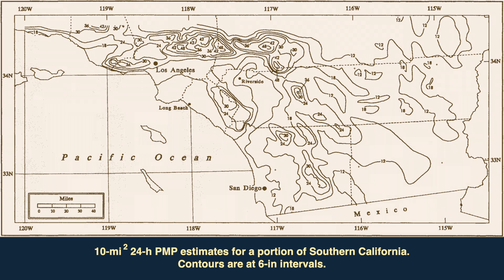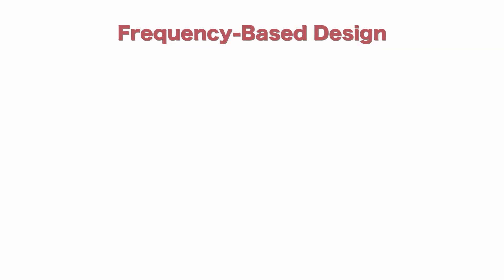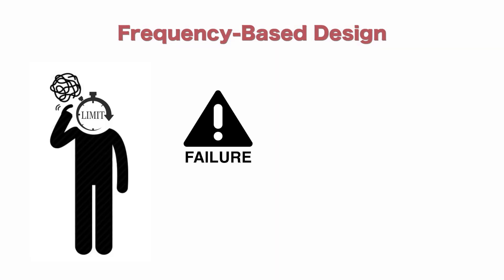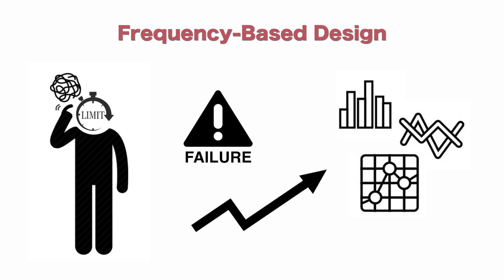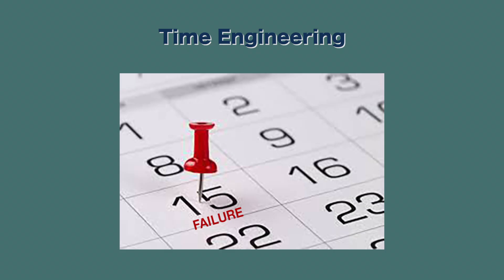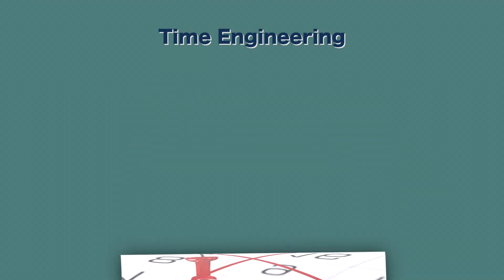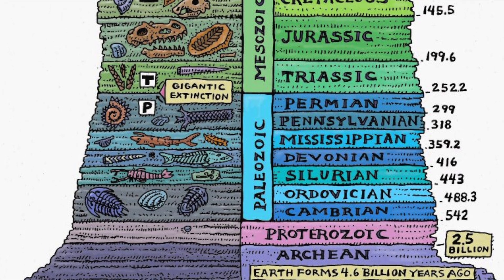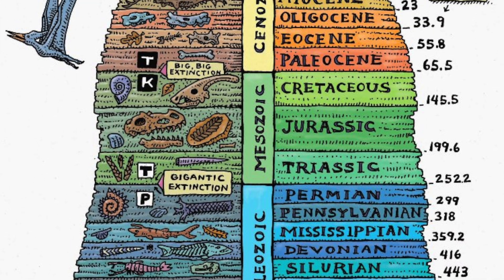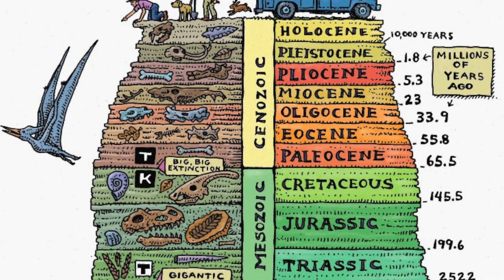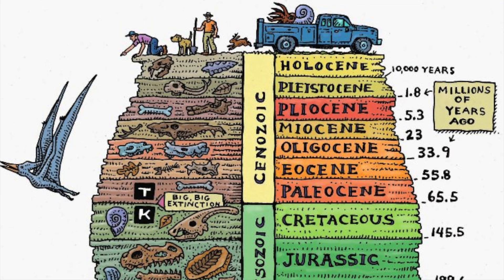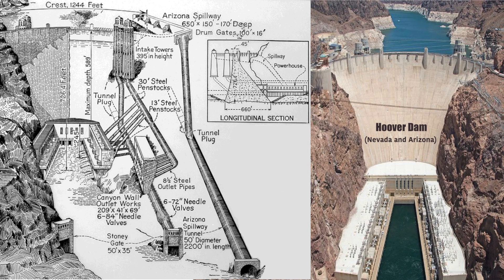Frequency-based design differs from time engineering in one important respect. Frequency-based design sets an arbitrary limit, after which failure is to be expected on the basis of a statistical, probabilistic analysis. On the other hand, time engineering ostensibly does not define the time to failure. Instead, it borrows from geologic time an undefined, relatively small amount of time in order to provide an economic value to society. In hydraulic engineering, time engineering has a distinct geomorphological flavor.